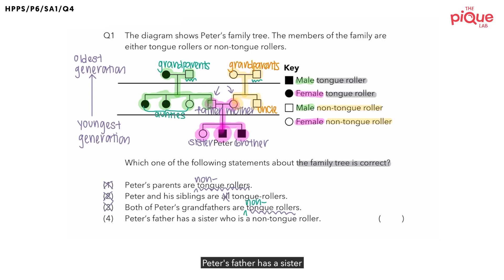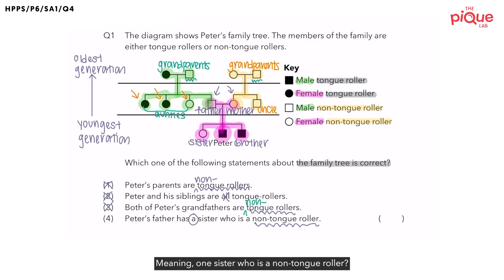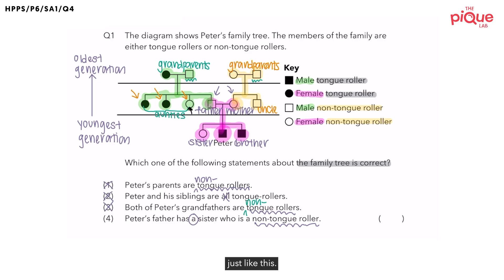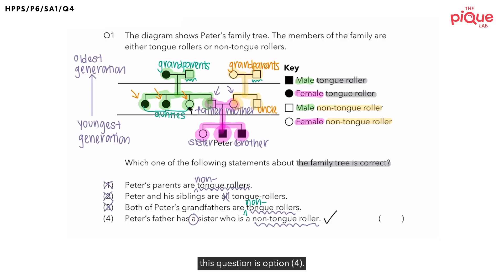Option four: Peter's father has a sister who is a non-tongue roller. His father's sisters are these three people. Is it true that he has a sister who is a non-tongue roller? If you look at the diagram, one of his sisters is unshaded — she is a non-tongue roller. So it is true that Peter's father has a sister who is a non-tongue roller. Option four is correct, and therefore the only correct option for this question is option number four.